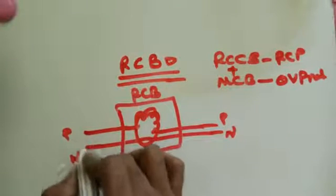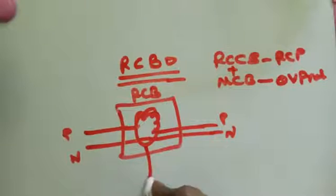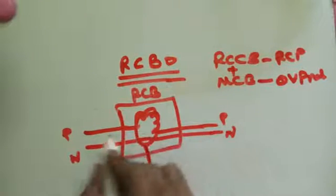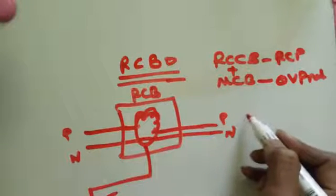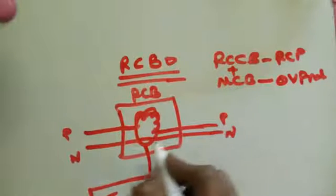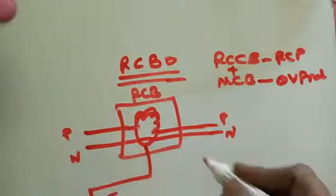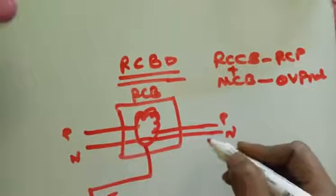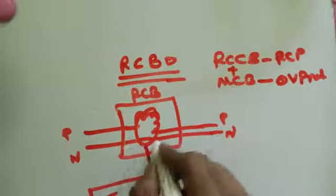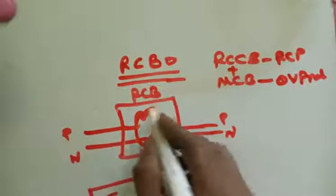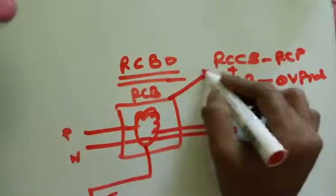Suppose the phase supply goes to the load, and the utilized power returns through neutral. In unbalanced or fault conditions, if power doesn't return the right way through neutral, the RCB will trip. This is the RCCB function.